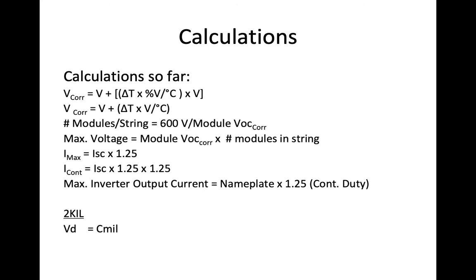Imax is short circuit current times 1.25. Current constant is short circuit current times 1.25 multiplied by another 1.25. Max inverter output current is nameplate rating of the continuous output and current times 1.25 for continuous duty. And now you have this last equation, which is 2KIL Vd equals Cmils.